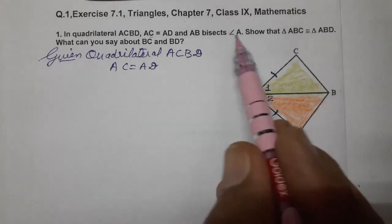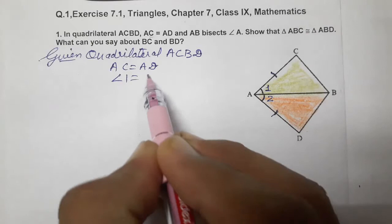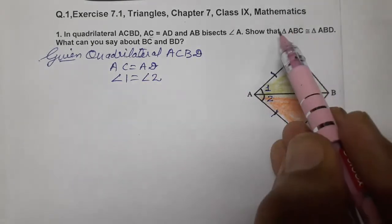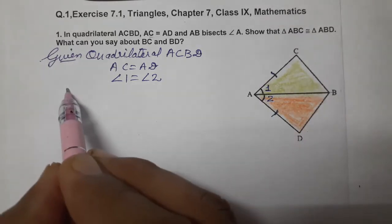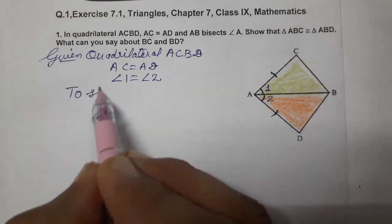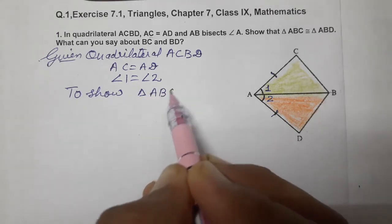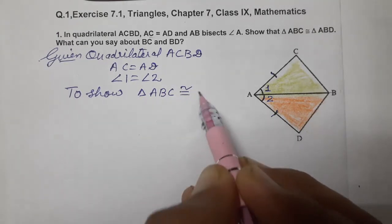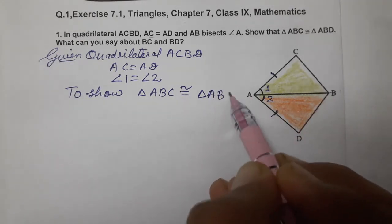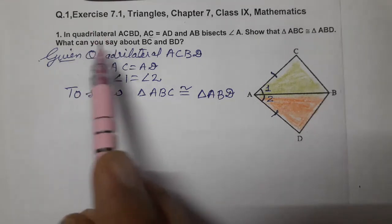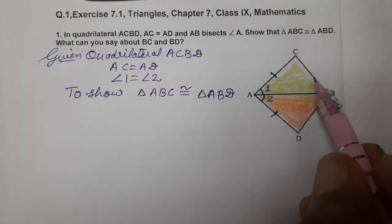AB bisects angle A, meaning angle 1 equals angle 2 is given. To show: triangle ABC (the green one) is congruent to triangle ABD (the orange one), and what can you say about BC and BD?